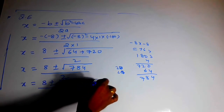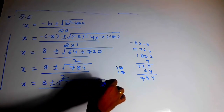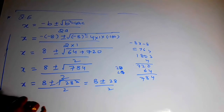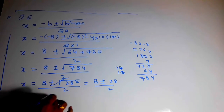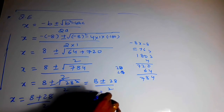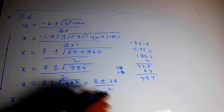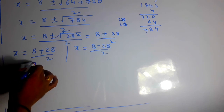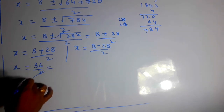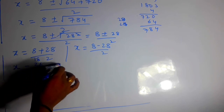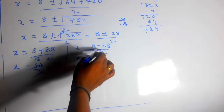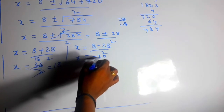Now 784 is nothing but 28 squared, so under root 784 equals 28. The square root cancels, giving us 8 plus or minus 28, divided by 2. Taking the plus case: 8 plus 28 equals 36, divided by 2 equals 18. Taking the minus case: 8 minus 28 equals minus 20, divided by 2 equals minus 10.